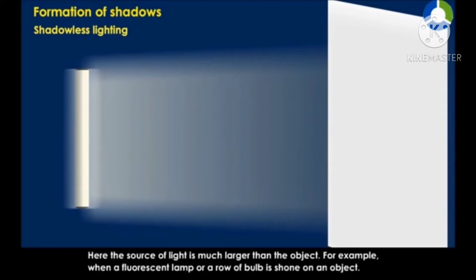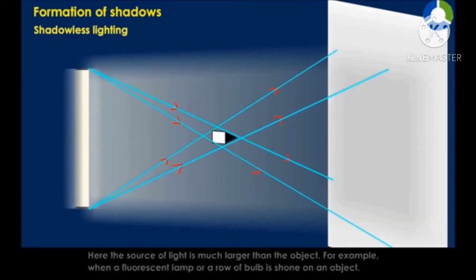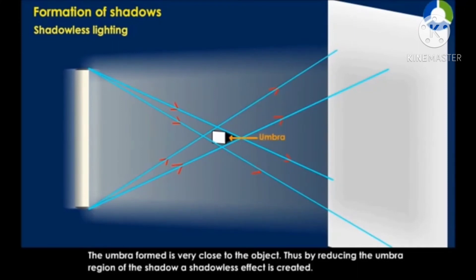For example, when a fluorescent lamp or a row of bulbs is shone on an object, the umbra formed is very close to the object.